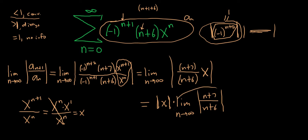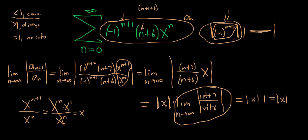This limit here is going to be 1, because you have a polynomial over a polynomial of the same degree. So the answer is the ratio of the leading coefficients — there's a 1 here and a 1 here, so it's just going to be 1. This is equal to the absolute value of x times 1, which is just the absolute value of x. So we used the ratio test and got the absolute value of x.